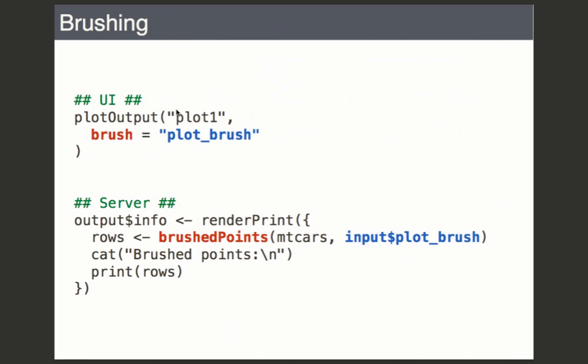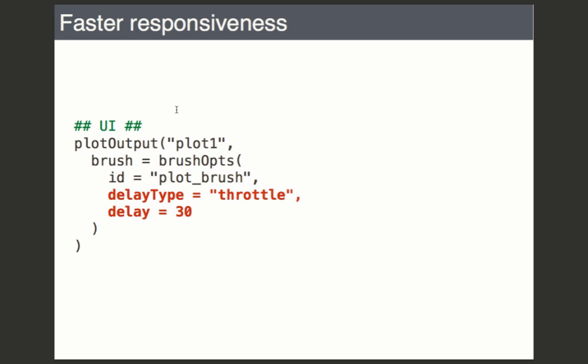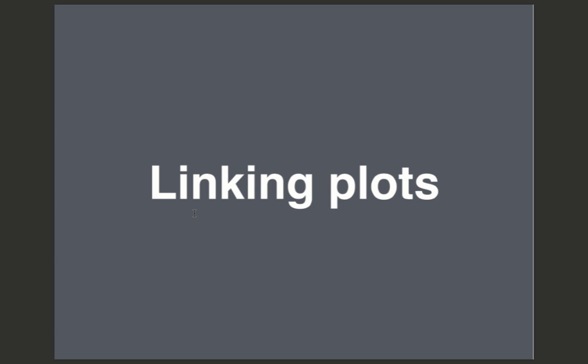Let me demonstrate brushing. Here's the plot — right now zero rows are selected. If I brush over those points, three rows are selected. I can move it over to here and eight points are selected. You could take these points and do something with them — hide them, include or exclude them from a linear model, and so on. The brushedPoints function makes it really simple to figure out which points are selected. There are also options like debouncing and throttling for the brush. If you're running locally rather than over the internet, you can reduce the delay before the browser sends an update to the server — for example 30 milliseconds for very fast response.